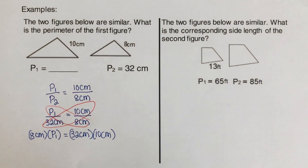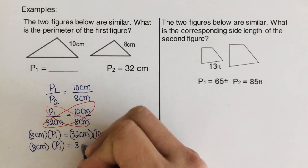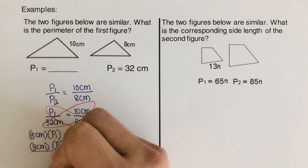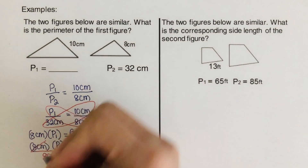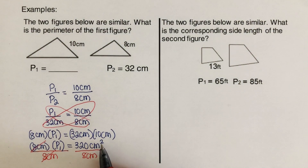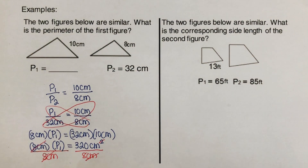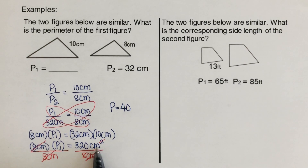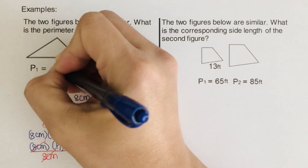Simplifying: 8 centimeters times P1 equals 320 centimeters squared, since centimeters times centimeters is centimeters squared. We divide both sides by 8 centimeters to isolate P1. The 8 centimeters cancel, and one centimeter from centimeters squared cancels with the centimeter in the denominator, leaving us with 320 divided by 8, which is 40. So P1 equals 40 centimeters.